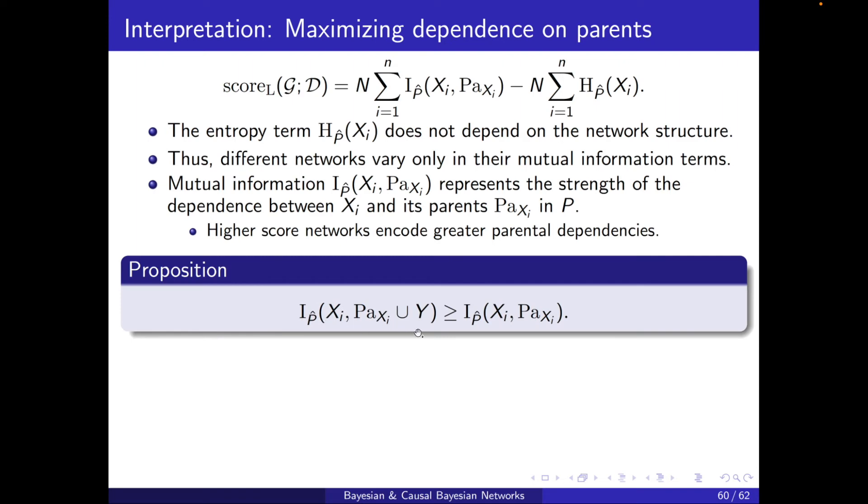But then we have this proposition that if you add some variable Y to the parents, then the mutual independence will not go down. And the interpretation is that Xi and parents of Xi had some mutual independence. They had some dependency. Here, I just added another variable Y. It can only do better. It can only increase the dependency of Xi to this new set.